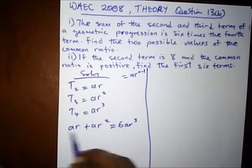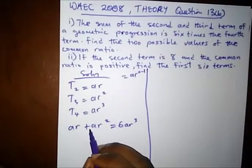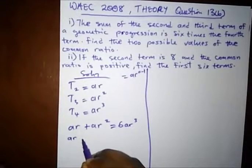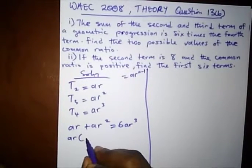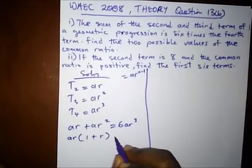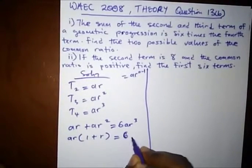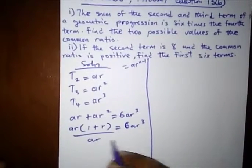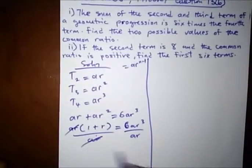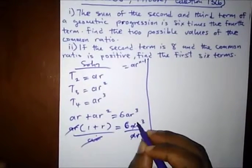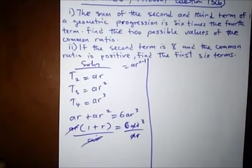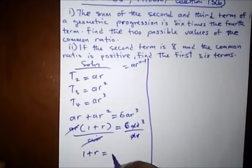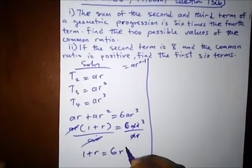What's common to this side? We have AR. So let's bring it out: AR bracket (1 + R) equal to 6AR cubed. We can divide both sides by AR, remembering change of subject formula. Cancel this, and we're going to be left with 2 Rs there, that's R squared. So we're left with 1 plus R equal to 6R squared.